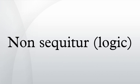An example of affirming a disjunct would be: I am at home or I am in the city. I am at home. Therefore, I am not in the city. While the conclusion may be true, it does not follow from the premises — the declarant very well could be in both the city and their home, in which case the premises would be true but the conclusion false. This argument is still a fallacy even if the conclusion is true. Note that this is only a logical fallacy when the word "or" is in its inclusive form. If the two possibilities in question are mutually exclusive, this is not a logical fallacy.